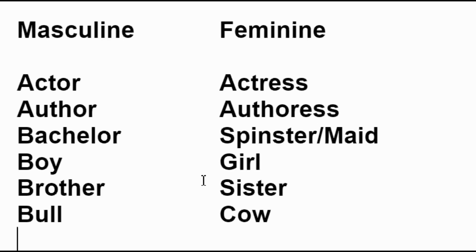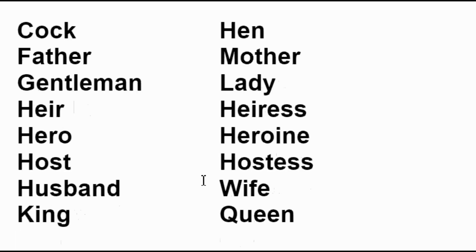Masculine and feminine gender pairs: actor, actress; author, authoress; bachelor, spinster or maid; boy, girl; brother, sister; bull, cow; cock, hen; father, mother; gentleman, lady; hare, hares; hero, heroine; host, hostess; husband, wife; king, queen.